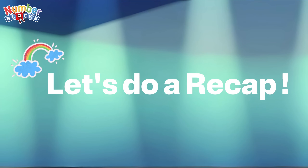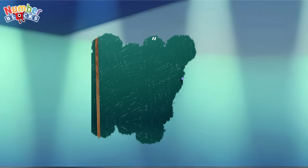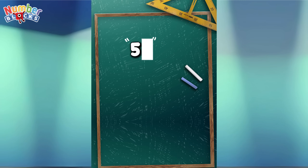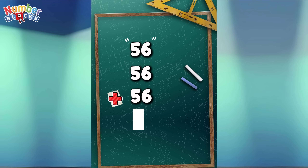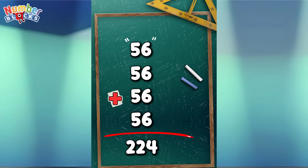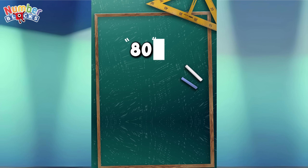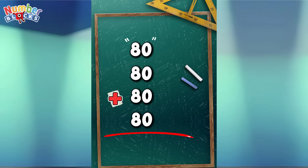Now join me and let's do a recap. Let's begin! 56 plus 56 plus 56 plus 56 equals 224. 80 plus 80 plus 80 plus 80 equals 320.